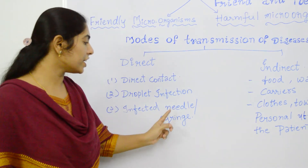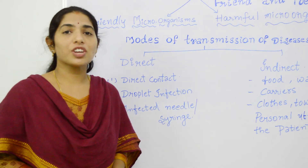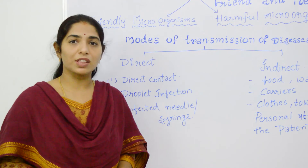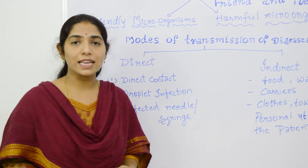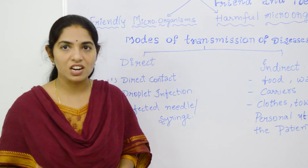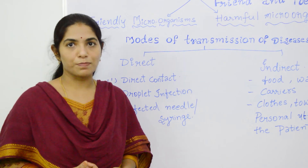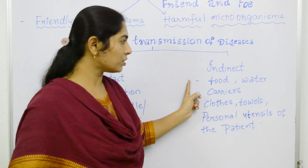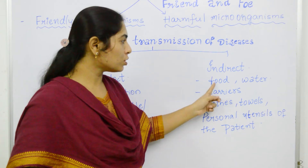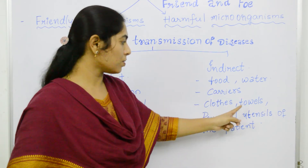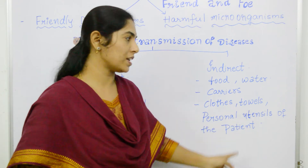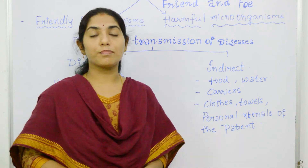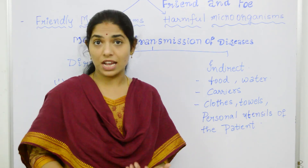The third is through an infected needle or syringe. Infection can also be transmitted directly by blood transfusion. For example, the AIDS virus can enter a healthy person through blood transfusion if the blood donor is an infected person. Under indirect transmission, diseases can spread through food, water, carriers, clothes, and personal utensils of the patient. In most cases, diseases spread through carriers such as house flies, mosquitoes, cockroaches, and other insects.